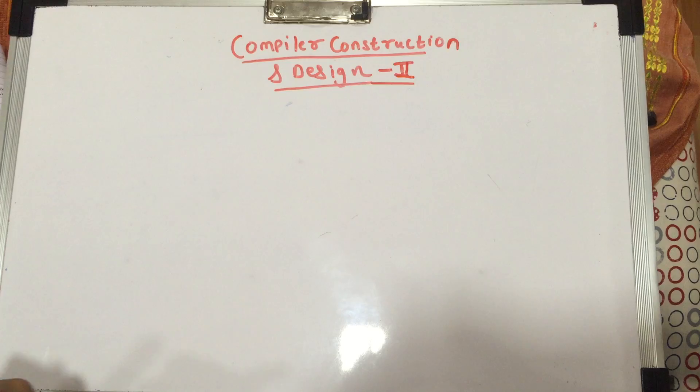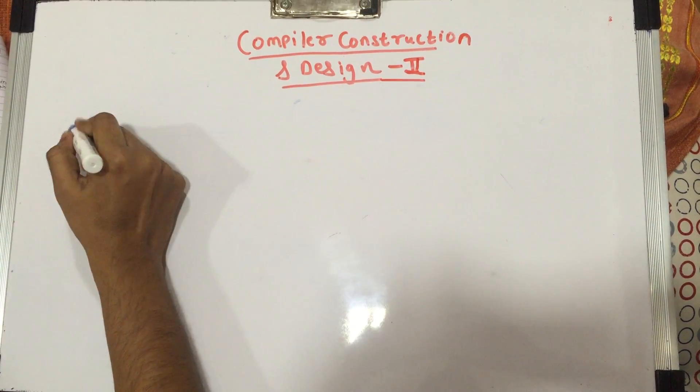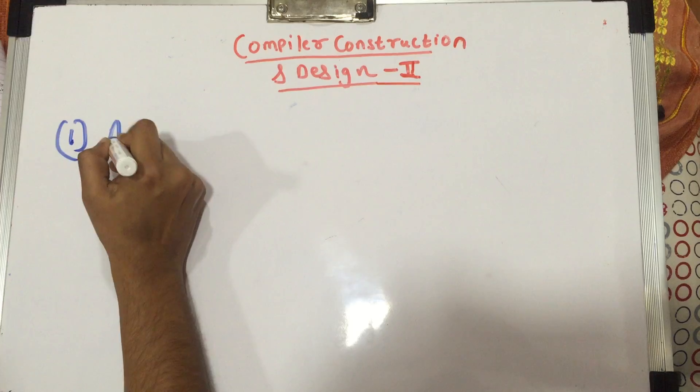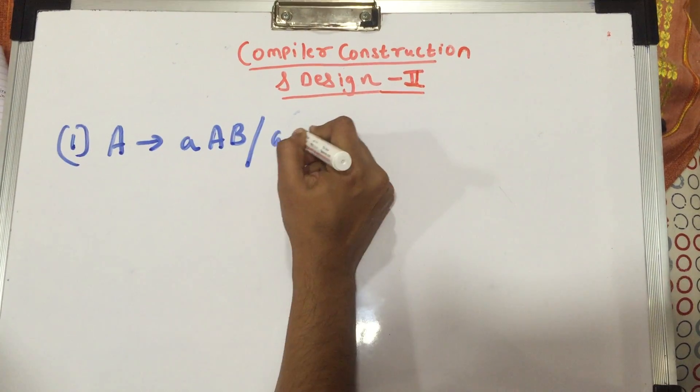Example number one: A gives you aAB slash aA slash a, and B gives you bB slash b.